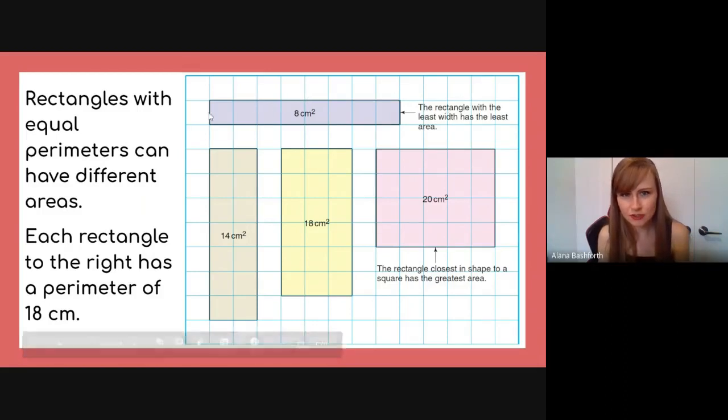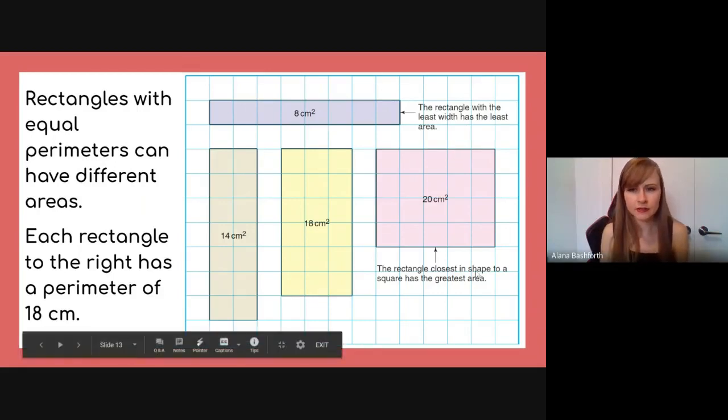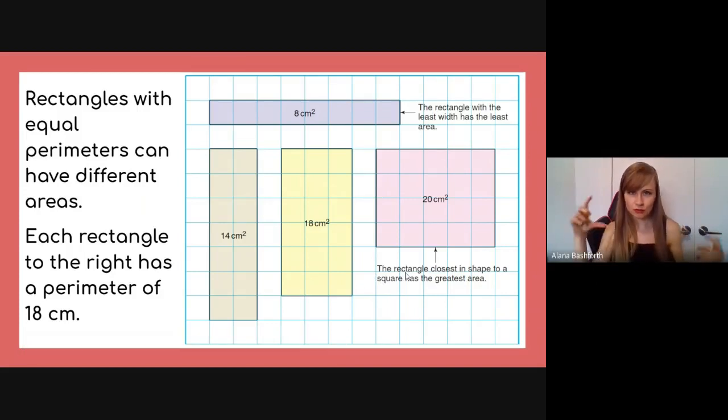But first, just keeping in mind this long skinny one, it says the rectangle with the least width has the least area. And then the rectangle closest to the shape of a square has the greatest area. So the closer you get to a square, the more area you have inside.